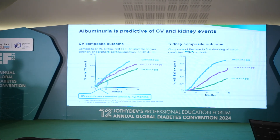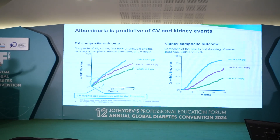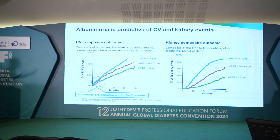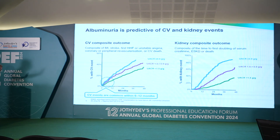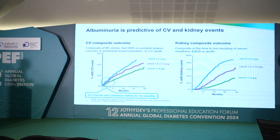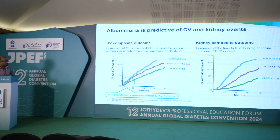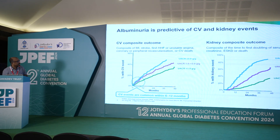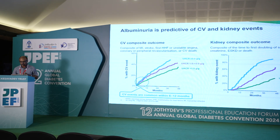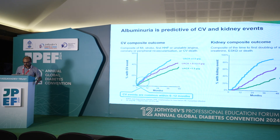Data from the RENAAL study shows that higher levels of albuminuria are not just a kidney concern. Even after the first detection of significant albuminuria, there is an increased risk of a CV composite outcome — including stroke, myocardial infarction, unstable angina, or hospitalization for heart failure. The kidney composite outcome shows increased risk of doubling of serum creatinine, end-stage renal disease, or death.